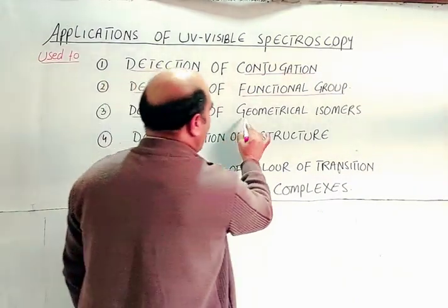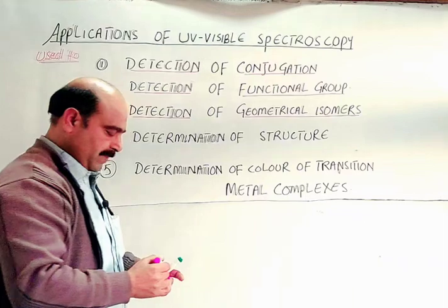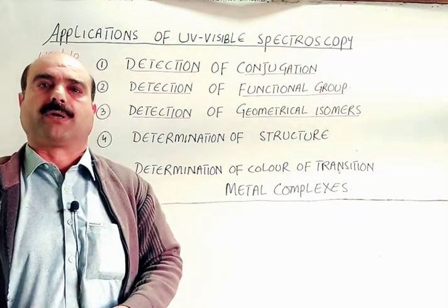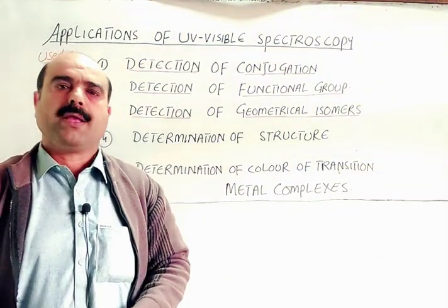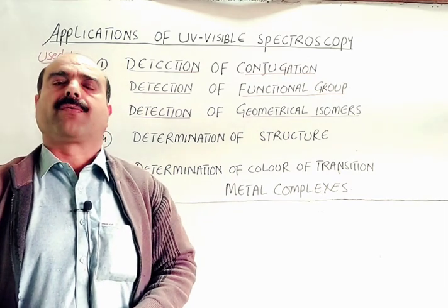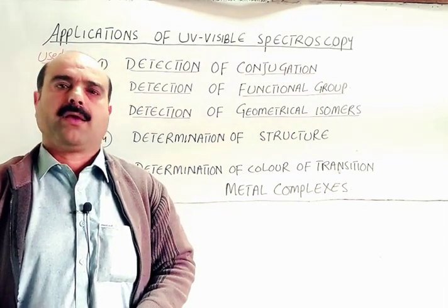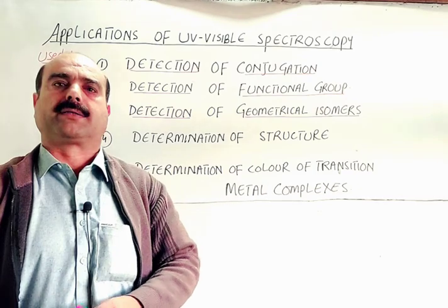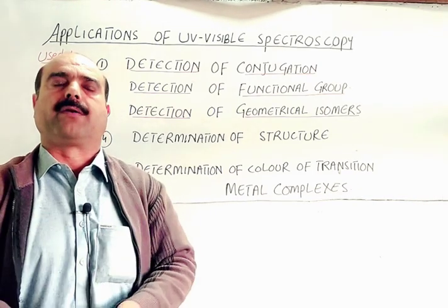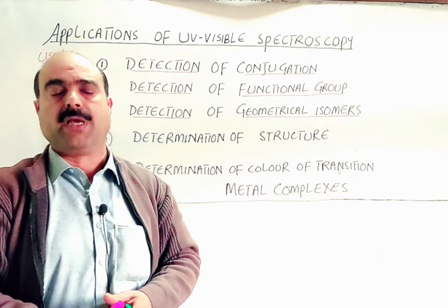Number three: UV-Visible Spectroscopy is also used for the identification of geometrical isomers. Geometrical isomers have the same molecular formula but have different groups on the same side of a double bond.